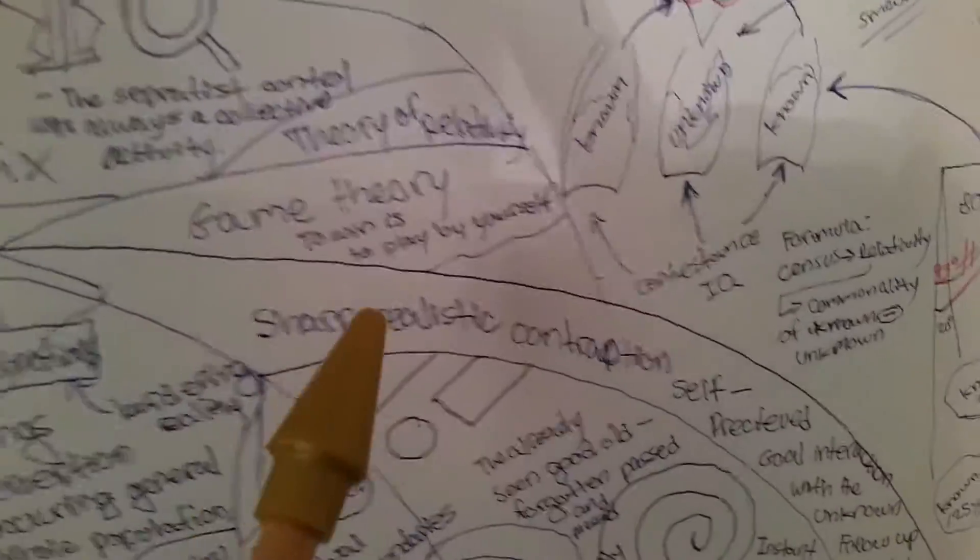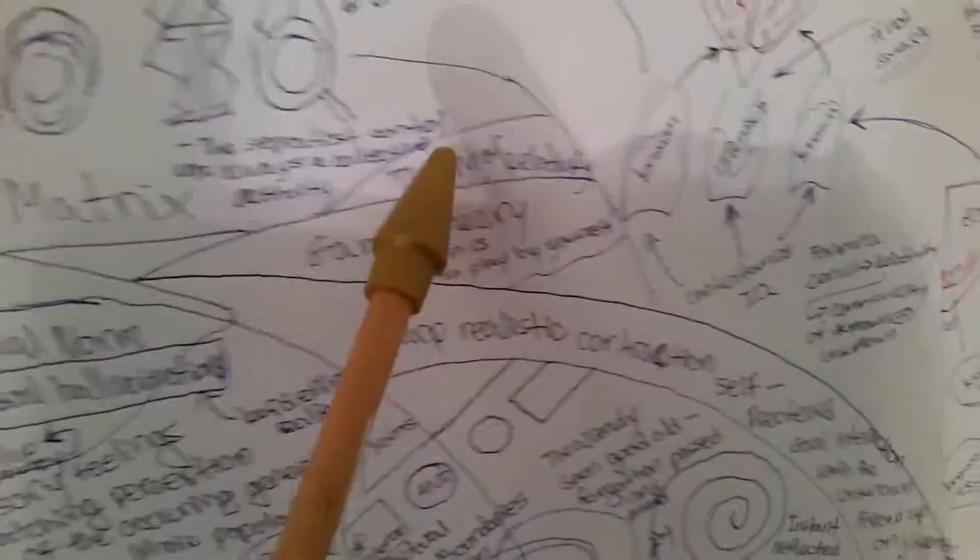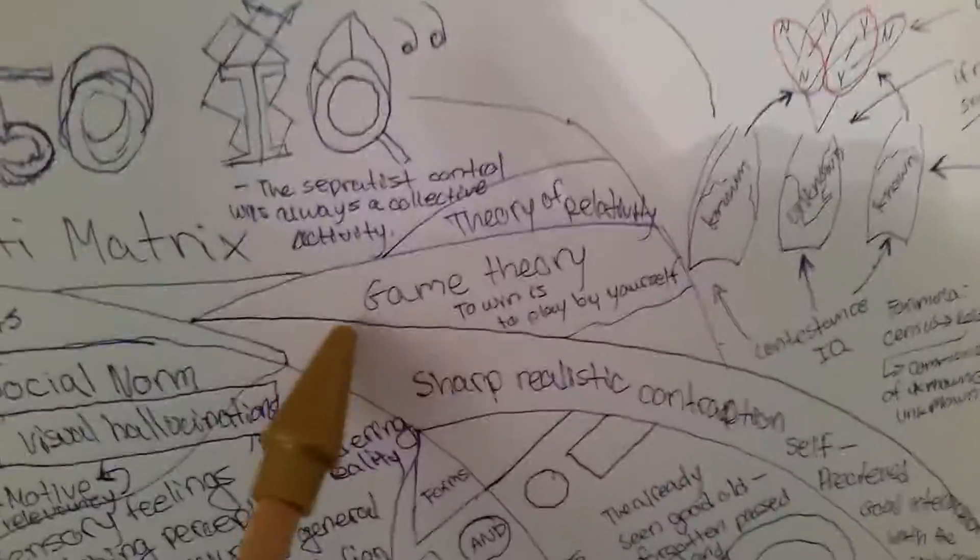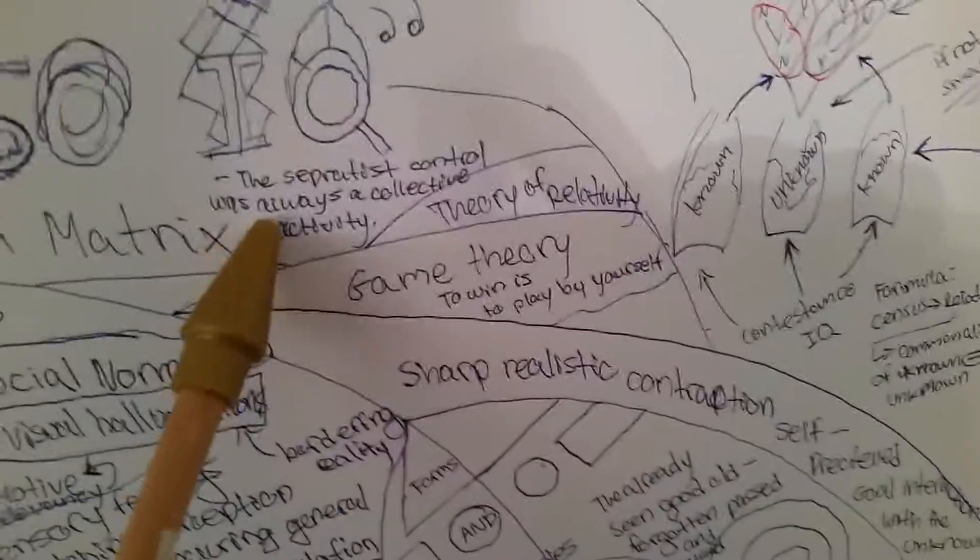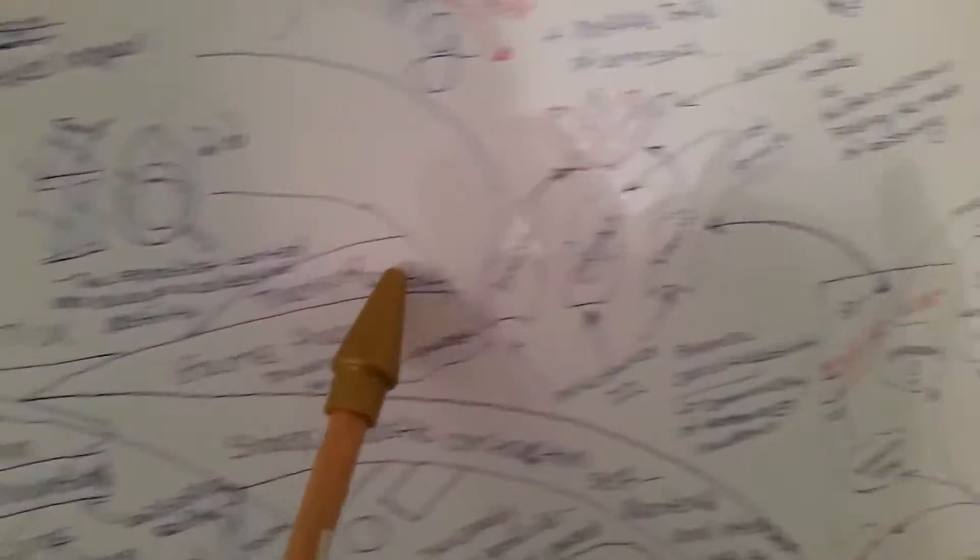Okay, now we're going to go and we're going to see game theory: to win is to play by yourself. That's basically why I came up with the idea of game theory, theory of relativity. The separatist control was always a collective activity. I came up with that quote for the Illuminati Matrix system. If it does exist, I kind of sort of believe it could be possibly existing.